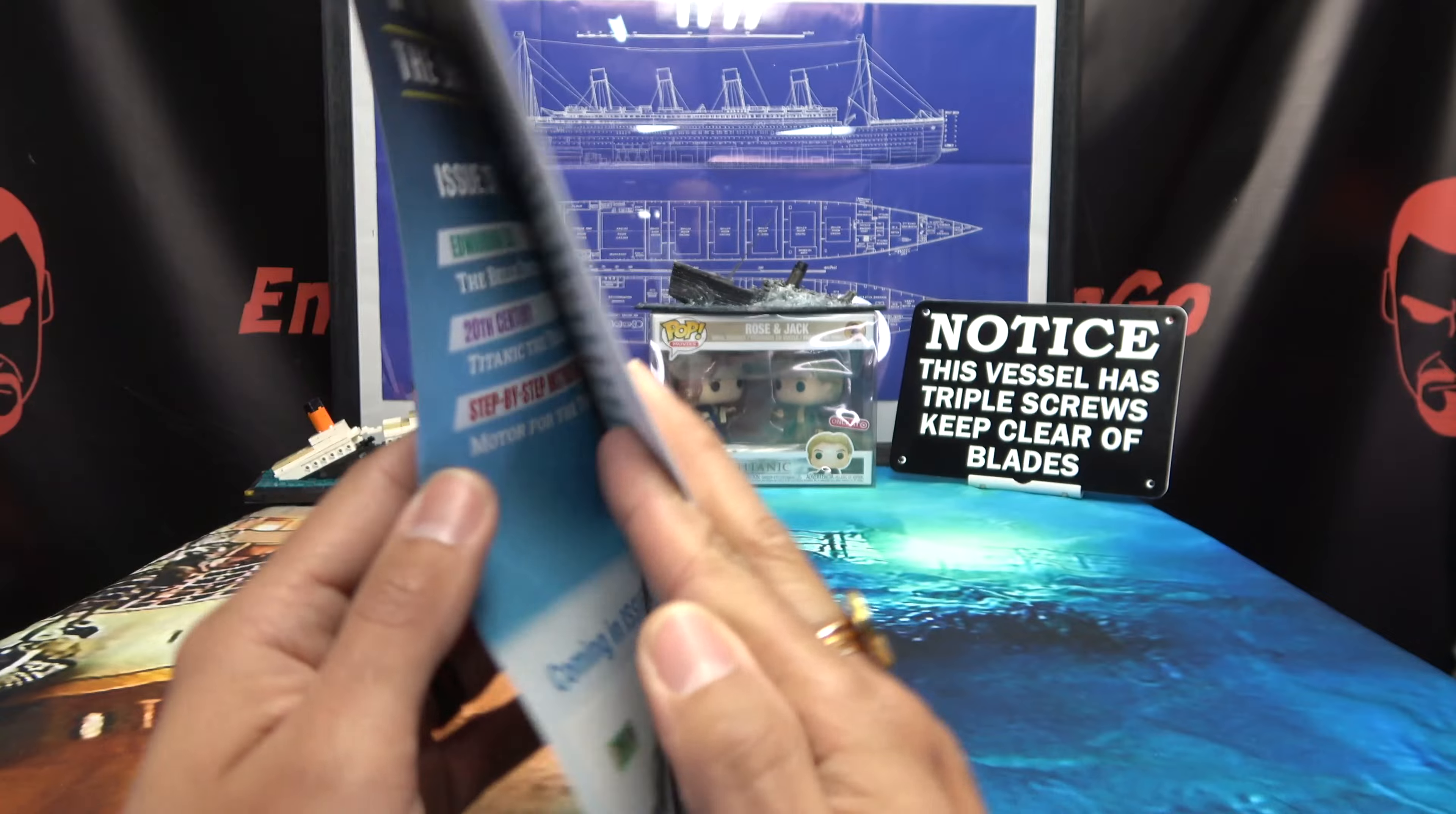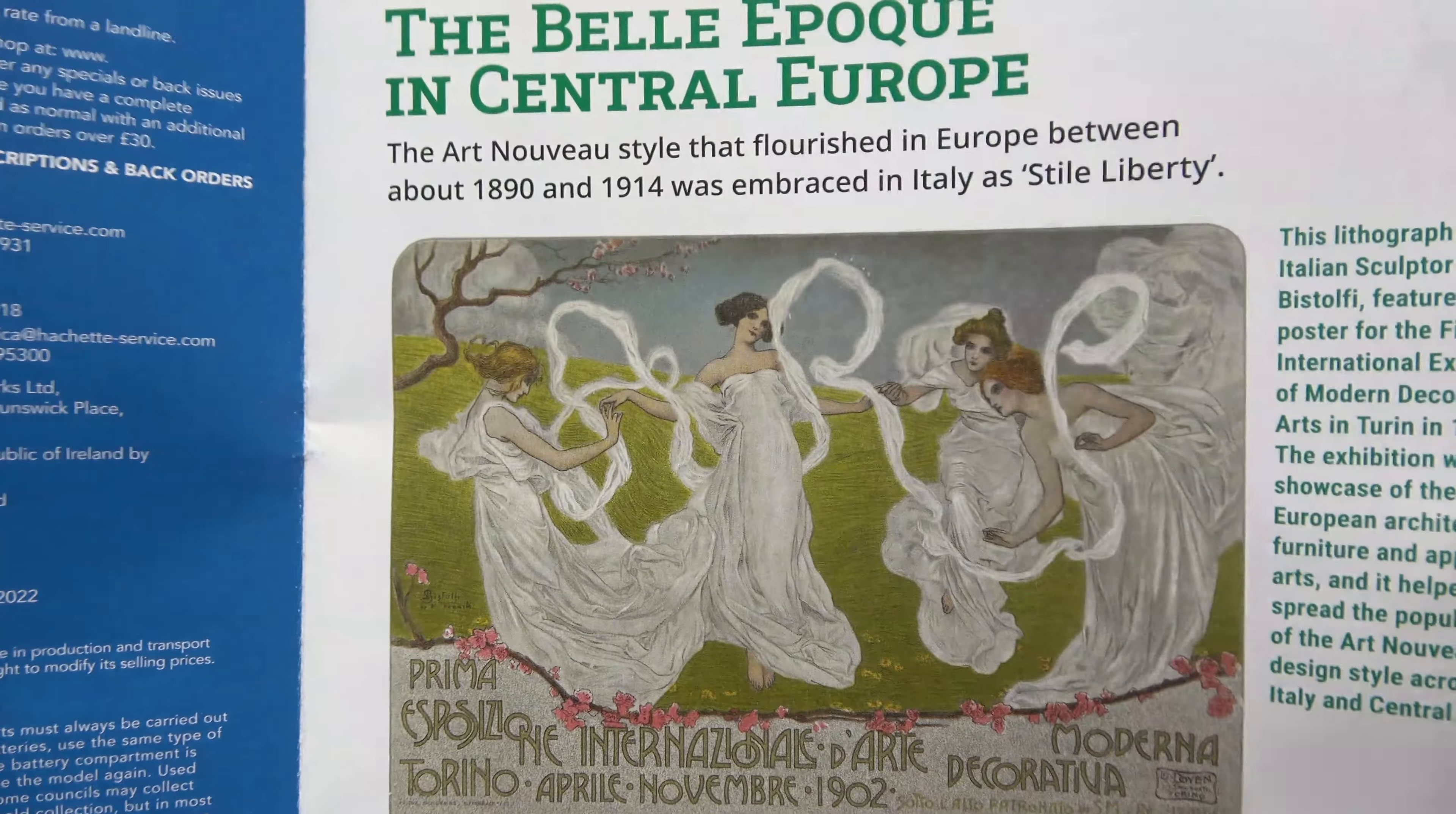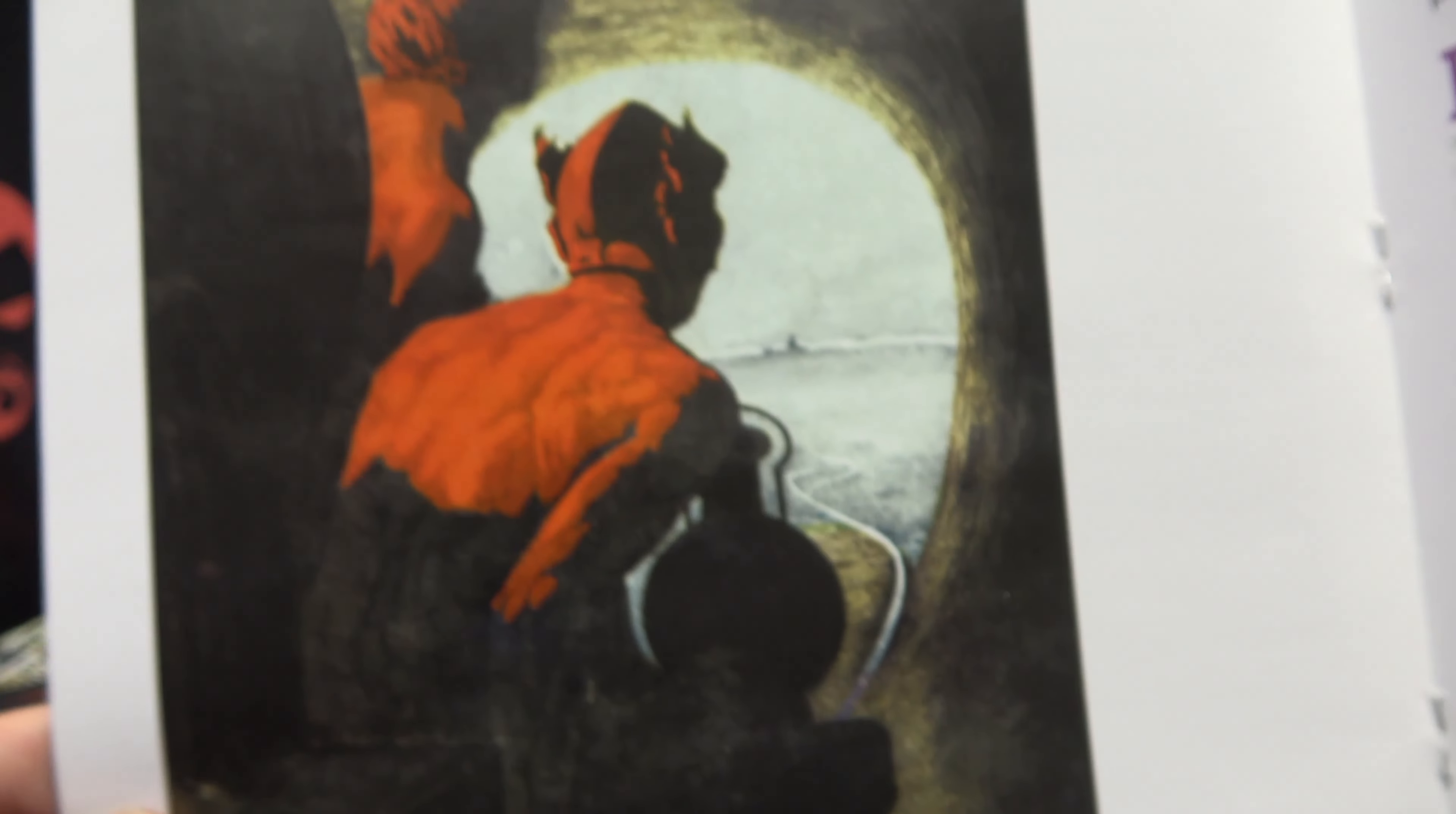So first, let's take a quick look through the magazine, see what's inside. The Belle Époque in Central Europe. The Art Nouveau style that flourished in Europe between about 1890 and 1914 was embraced in Italy as Style Liberty. Oh, it's so stylish. It's so freakin' stylish. That is a stylish building. So stylish. Oh, more stylish buildings. Beautifully stylish buildings.